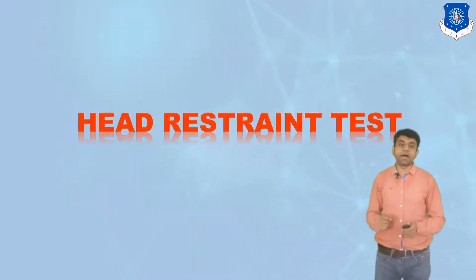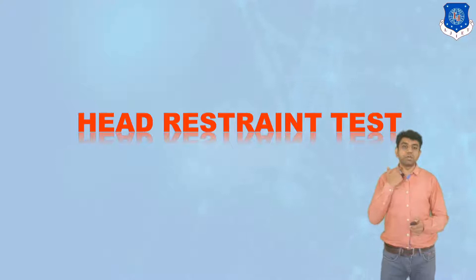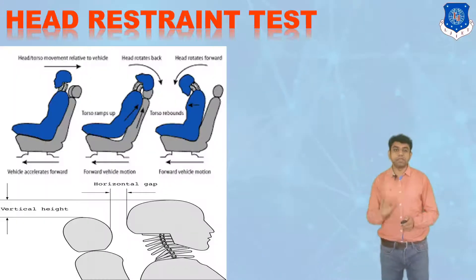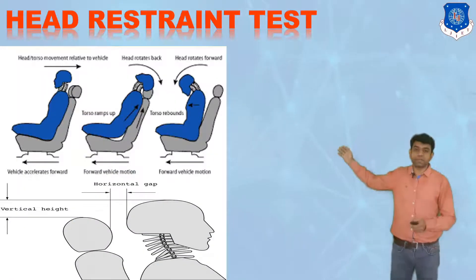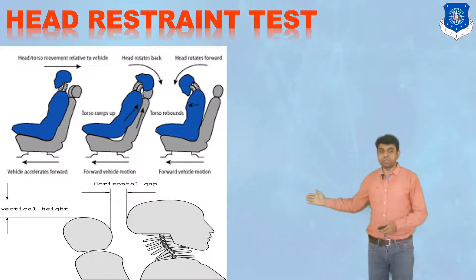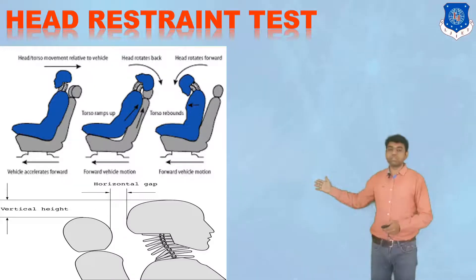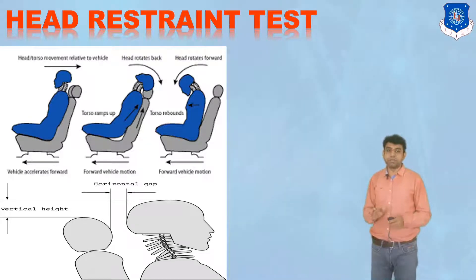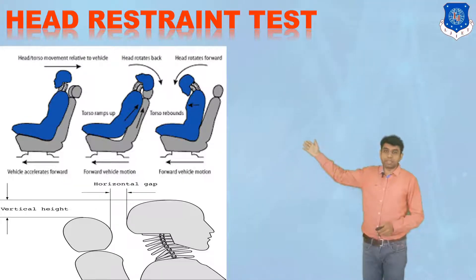The next test is the head restraint test. We focus very little on the head restraint, but whenever an accident happens, there can be chances of the neck part getting damaged or the spine being dislocated. So we need to have a proper study of this particular head restraint. For that, we need to have two dimensions very clear in our mind: vertical height and the horizontal gap. These two dimensions of the head restraint must be in a proper arrangement. If it is in a proper position, then whenever an accident happens, damage will be minimal. We need to evaluate the motion of the body when the accident happens.